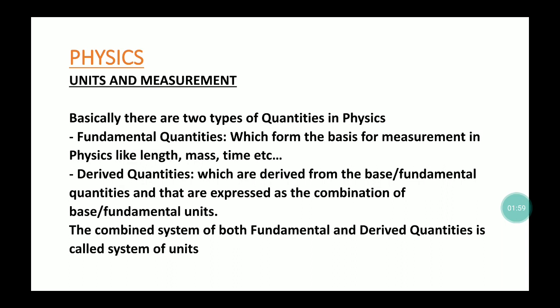What are units and measurements? Basically there are two types of quantities in physics which we use for measurement. The first quantity is fundamental quantities — these are the standard quantities. The second type is derived quantities, which are derived from the fundamental quantities. The combination of fundamental and derived quantities is what we call the system of units.